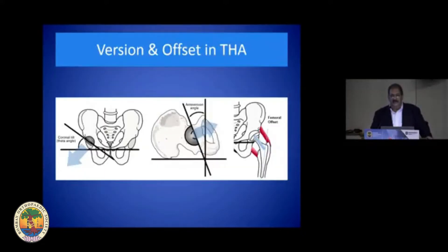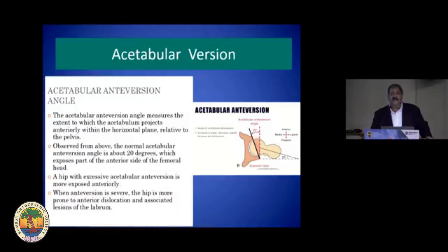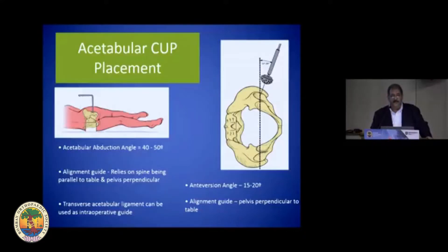Version and offset are two components which are in control of the operating surgeon, and we have to be very aware of how we restore these as much as possible. Acetabular version is the angle at which the acetabulum projects anteriorly from within the horizontal plane relative to the pelvis, and usually around 20 degrees is the accepted norm.